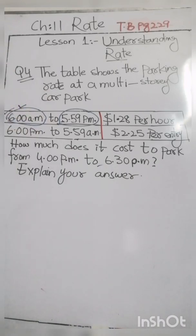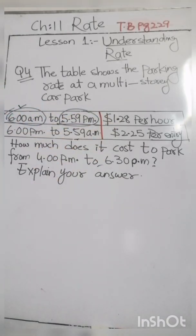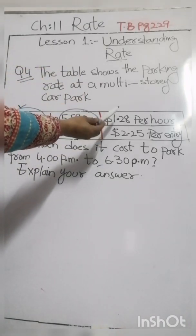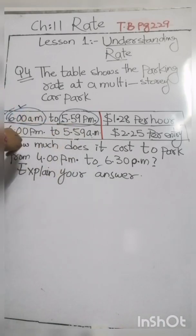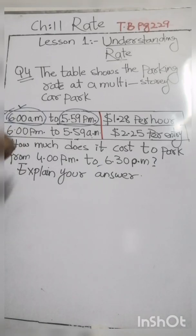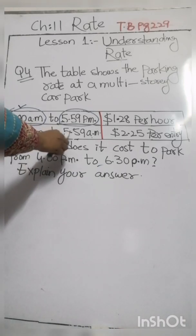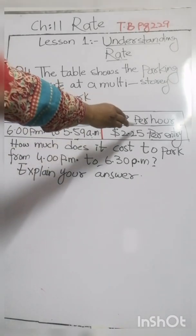If we stay from 6 a.m. to 7 a.m. that is two hours, we must pay $1.28 two times. The difference is in the evening: if we stay from 6 p.m. to 5:59 a.m. — evening to morning — we just pay $2.25 per entry. It means if we park for the whole night, even for twelve hours, we just pay $2.25 one time. But in the morning to evening we must pay for every hour.